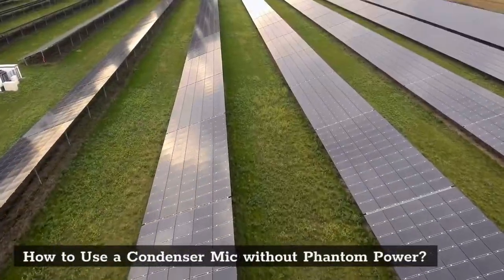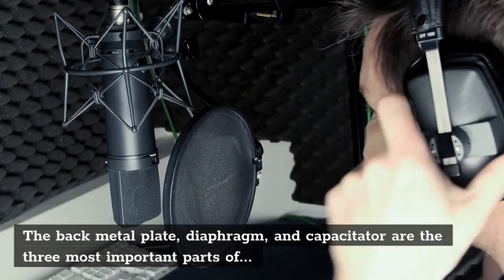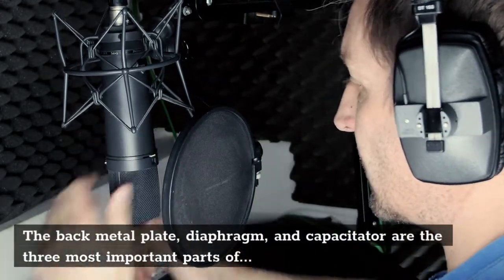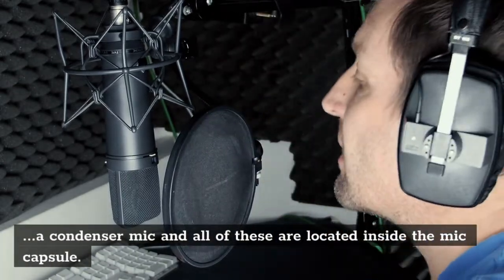How to use a condenser mic without phantom power? Condenser mics are great but they do not work on their own; they need energy. The back metal plate, diaphragm, and capacitor are the three most important parts of the condenser mic and all of these are located inside the mic capsule.